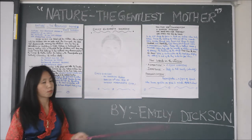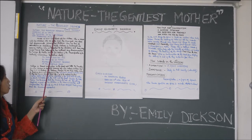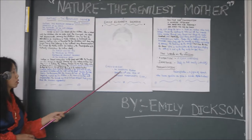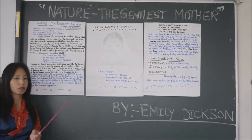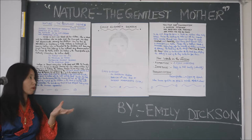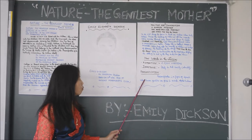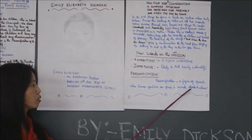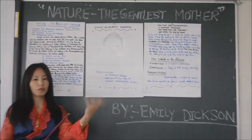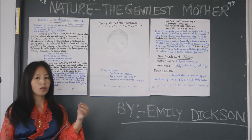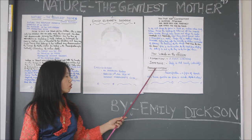In this poem, 'Nature, the Gentlest Mother,' Dickinson has personified beautiful nature as our mother. Personification is a figure of speech where human qualities are given to animals, objects, or ideas — where living or non-living objects are given a human form.